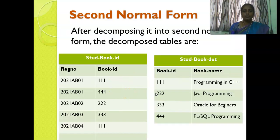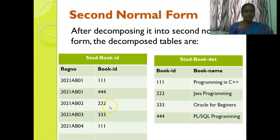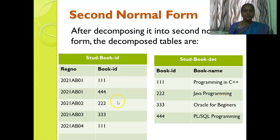We have to decompose this table. After decomposing, it now satisfies second normal form. The table is split into: register number with book ID, and book ID with book name. Book name is no longer depending on only part of the composite key — it is in a separate table. So now this table is under second normal form.